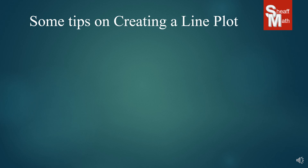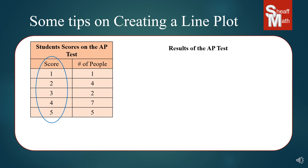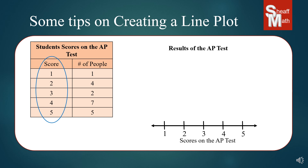Here are some tips when creating a line plot. You'll be given some sort of information like a table. First, understand what's going on and make a title for your line plot — this one uses the AP test score again, so 'Results of the AP Test.' Then look at the left side for the scores: one, two, three, four, and five. Make a number line with those values and label it 'Scores on the AP Test.' Then go ahead and use the number of people to put the X's in.